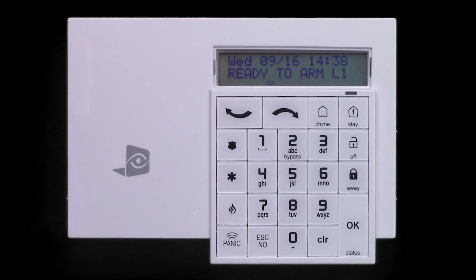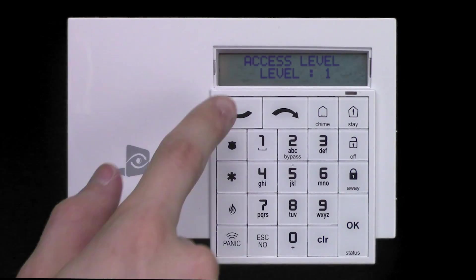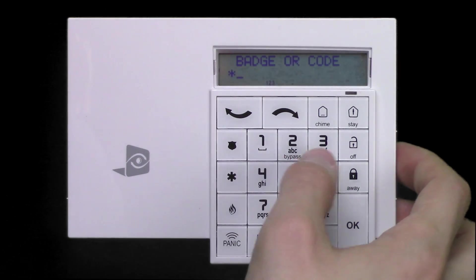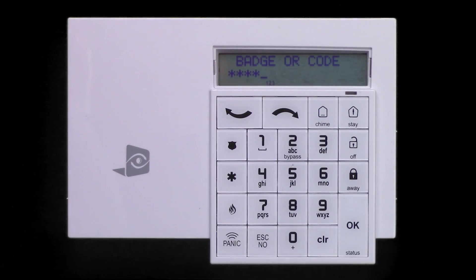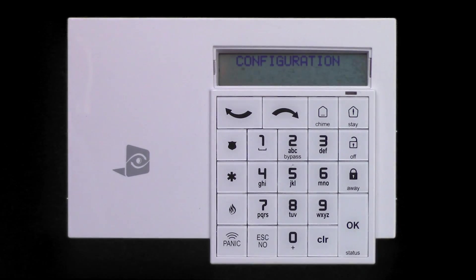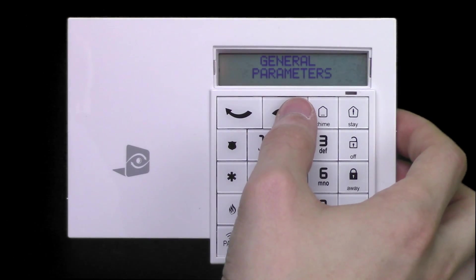At the keypad, change the installer access level to Level 4. Navigate to the Configuration menu, then to Areas and Devices.